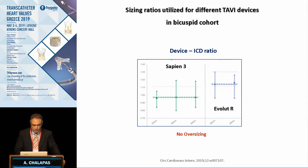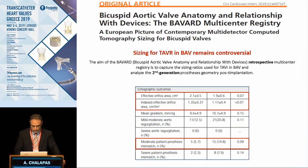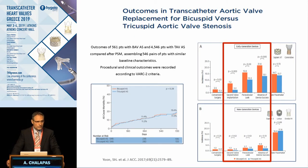Oversizing can increase the risk of complications in this population. Post-procedure CT data show that the prostheses used were almost 10% smaller than the mean annulus diameter at baseline. Echocardiographic data have shown that the effective orifice area is smaller in the bicuspid population and there is a high risk of patient-prosthesis mismatch.